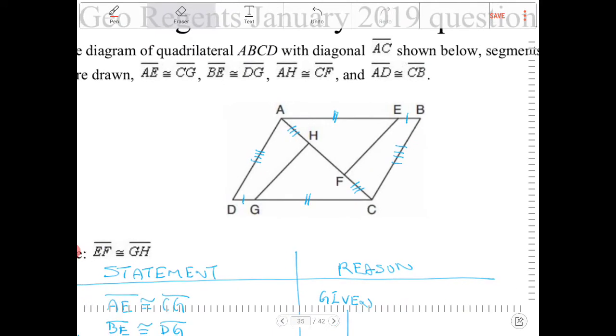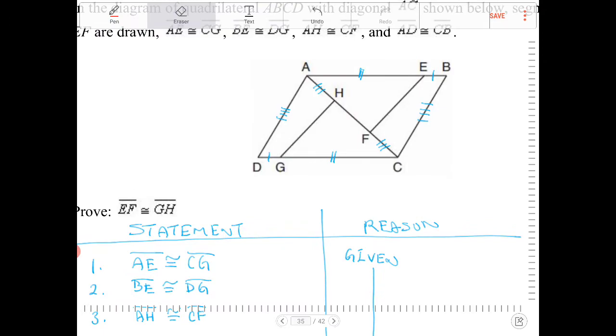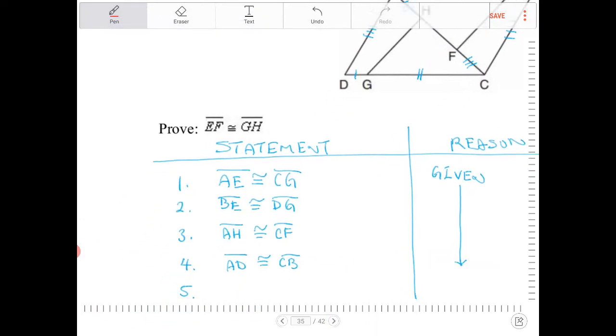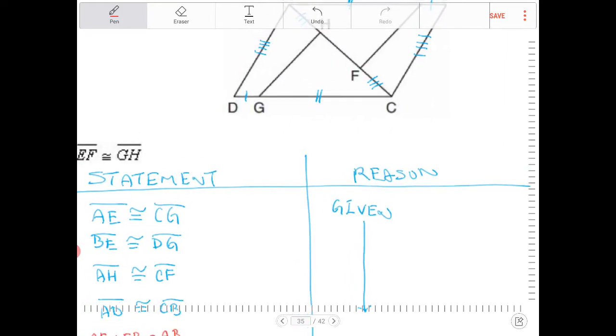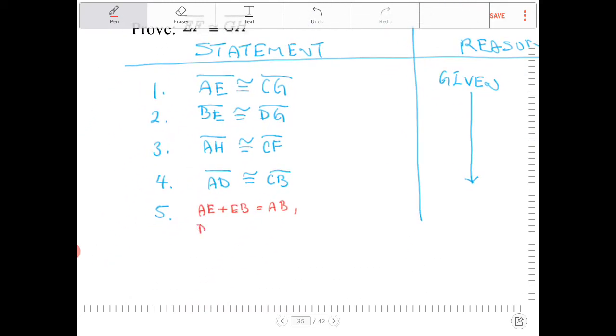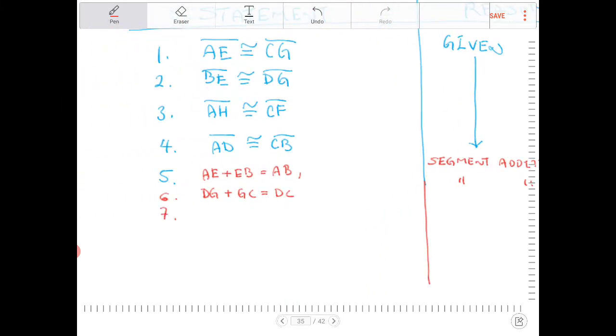I'm going to leave all those markings in blue because those are all a part of the givens. I'm going to set up a segment addition postulate to show that AE plus EB is equal to AB. And I want to say that DG plus GC is equal to DC. So this is true because of segment addition postulate.